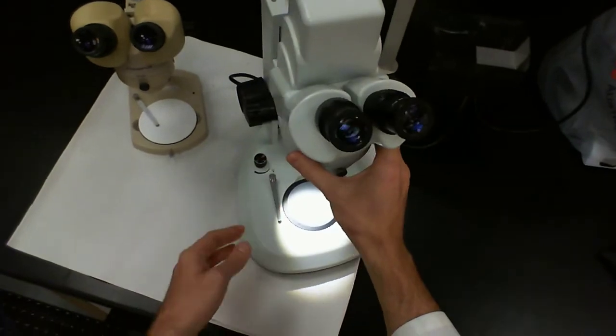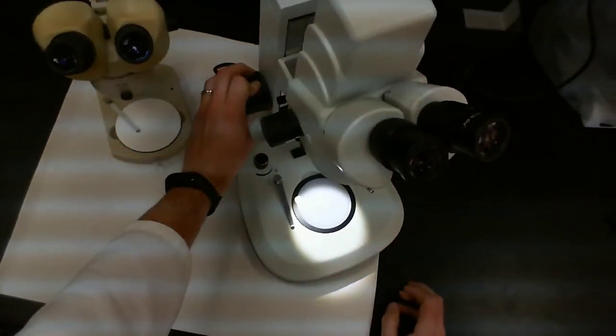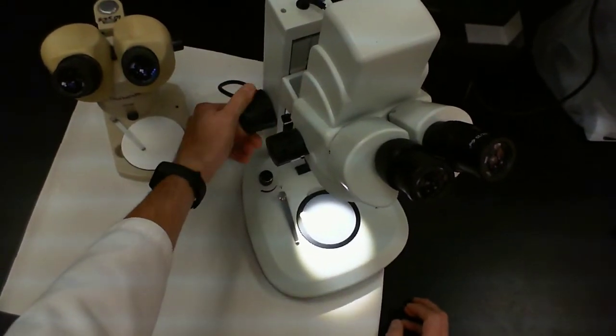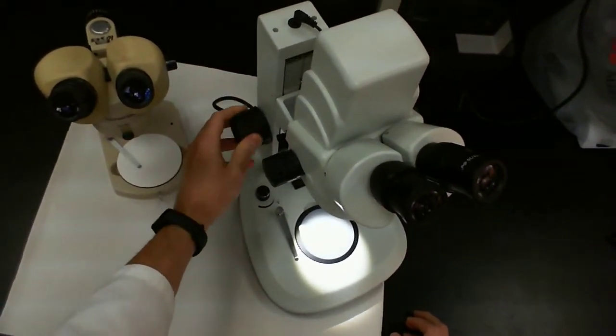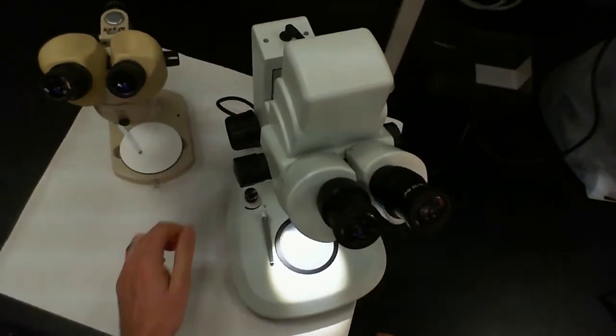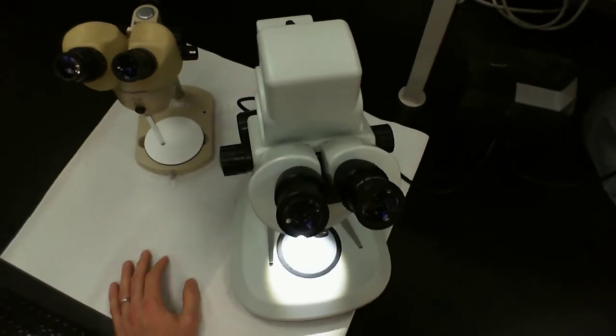We have other components on this microscope. We have a focusing knob. Just like with a compound light microscope, we do have a focusing knob, but there's only a coarse focus. There is no fine focus here, simply because the magnification we're dealing with here is much lower compared to a compound light microscope.